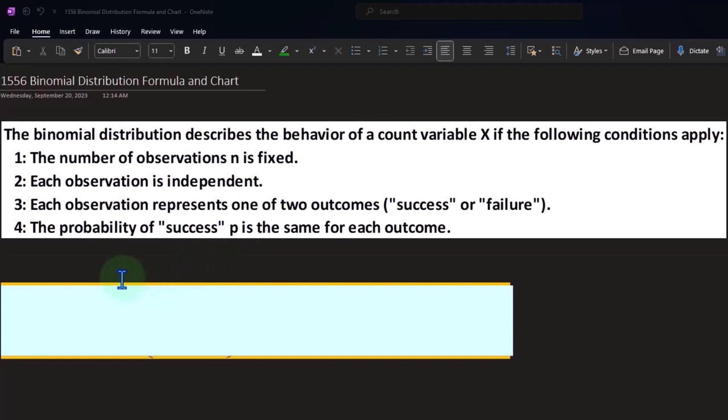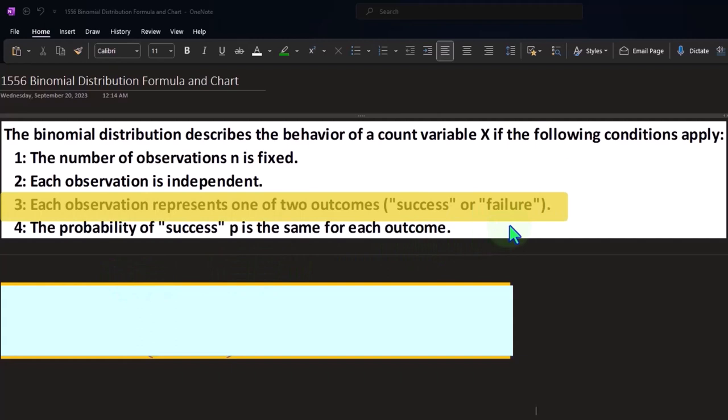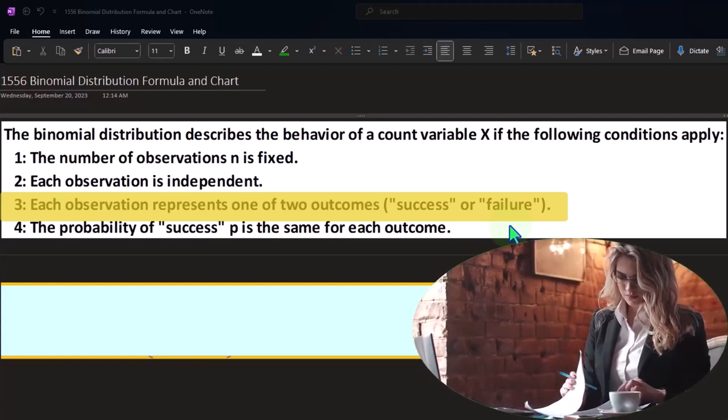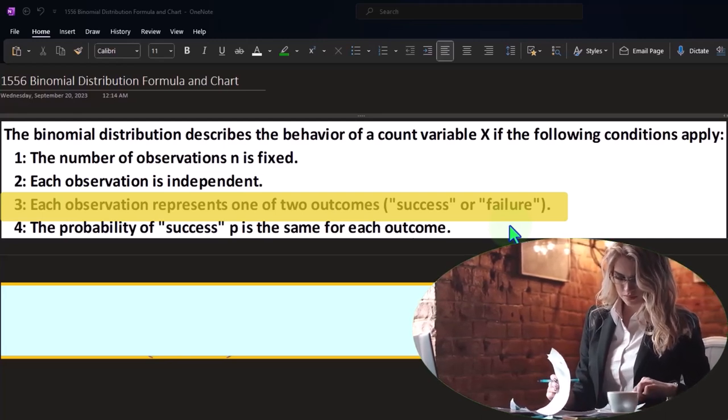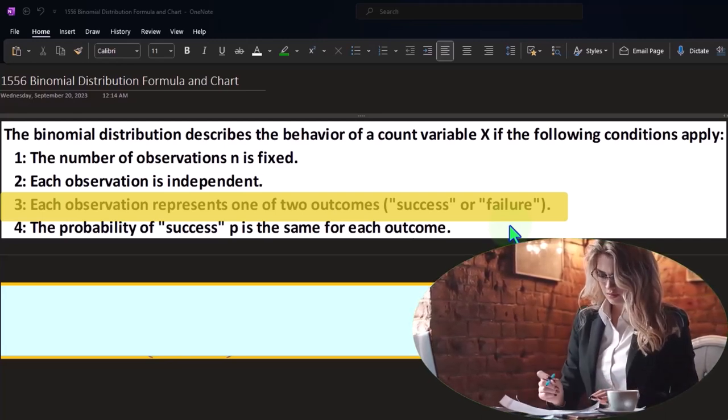Number three, each observation represents one of two outcomes, success or failure. So anytime there's kind of this binomial two type of outcome situation, then we want to be able to say, can I define whatever I'm looking at as either a success or a fail type of situation? So we're not looking at situations where there's gradients of success or sales, such as I had a sales.